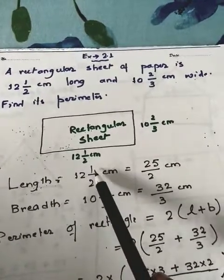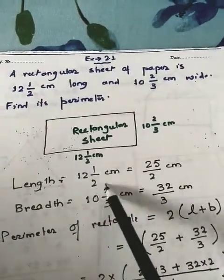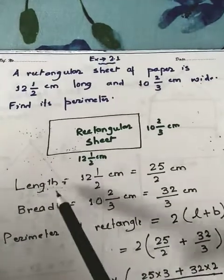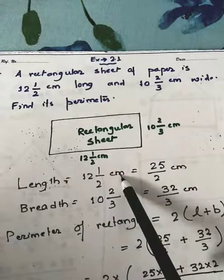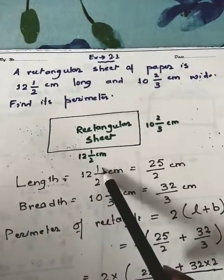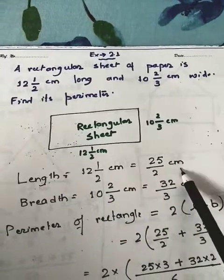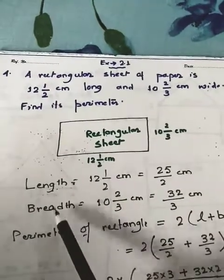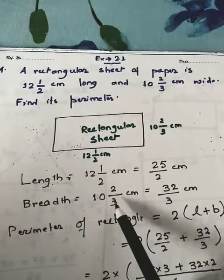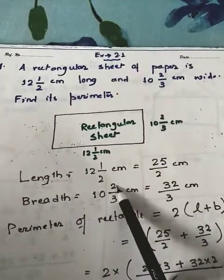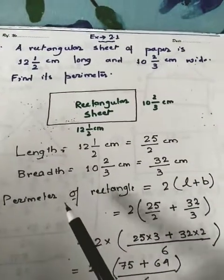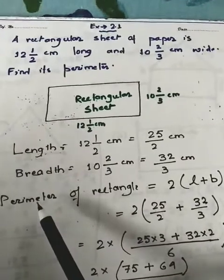The first thing I've done is convert the mixed fraction form to improper form. Length = 12 and 1/2 cm → 2×12 = 24, 24+1 = 25, so 25/2 cm. Breadth = 10 and 2/3 cm → 3×10 = 30, 30+2 = 32, so 32/3 cm.